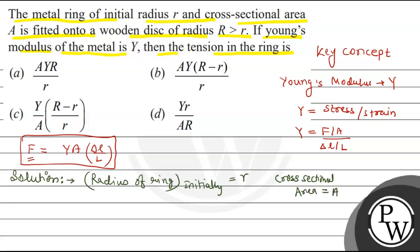This is the initial condition. Finally, when fitted onto wooden disc, then radius of ring in final condition is R.